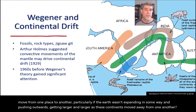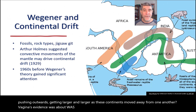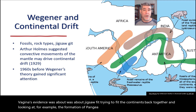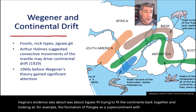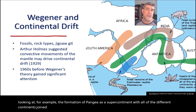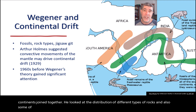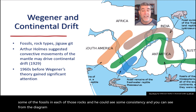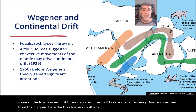Wegener's evidence was about jigsaw fit — trying to fit the continents back together and looking at, for example, the formation of Pangaea as a supercontinent with all of the different continents joined together. He looked at the distribution of different types of rocks and also some of the fossils in each of those rocks and he could see some consistency. And you can see from the diagram here, the Gondwanan southern group of continents and the distribution of different types of organisms across them.